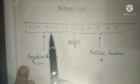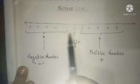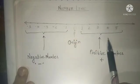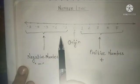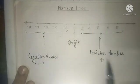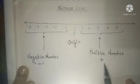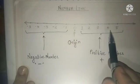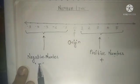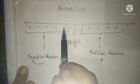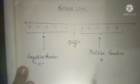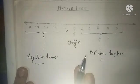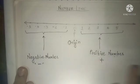So your number line consists of: one origin which is 0, positive numbers on the right hand side, and negative numbers on the left hand side. Positive numbers have a plus sign which we don't need to write before them, but negative numbers require the minus sign to be written before them. Based on this concept, today we are going to solve a few workbook questions.